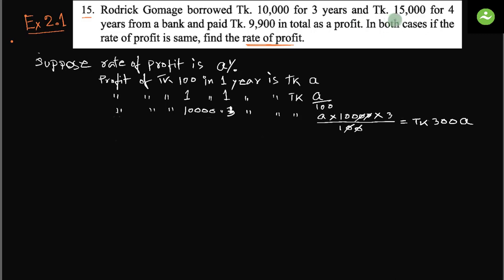Again, Rodrick borrowed another amount, 15,000, for four years. So if we calculate profit of taka 15,000 in four years, the profit is taka, in the same way, a into 15,000 into 4 by 100. If we simplify, this is taka 600a. So if we add these two profits...